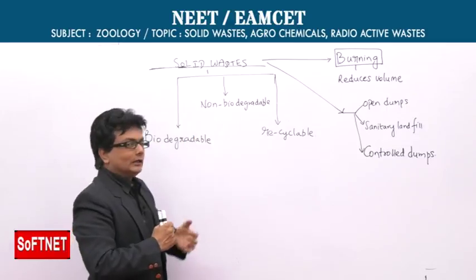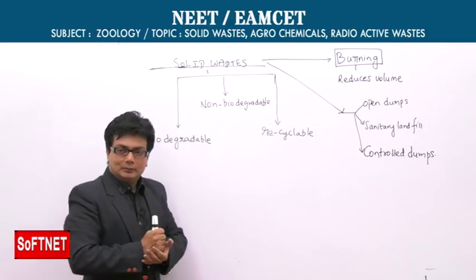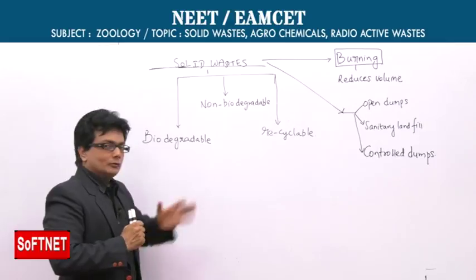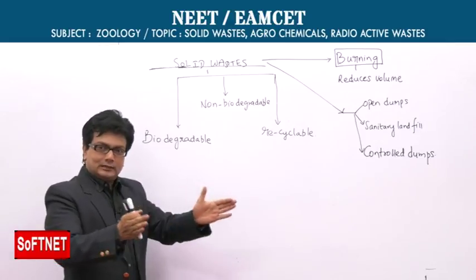We can classify solid waste into three categories: biodegradable, non-biodegradable, and finally recyclable. If we look at this classification, we can divide the material accordingly and deal with each type more effectively.